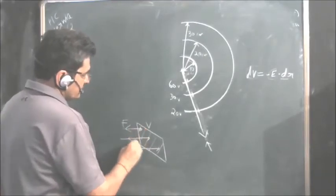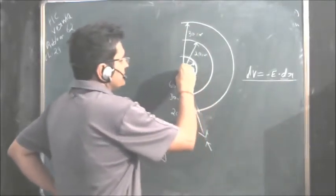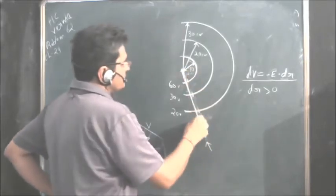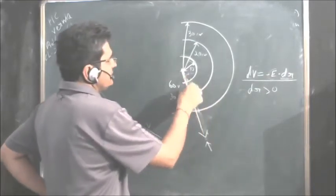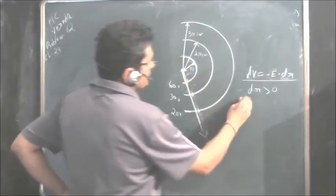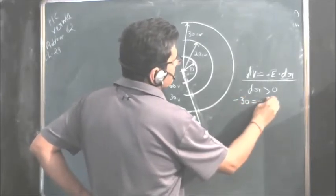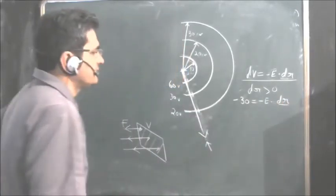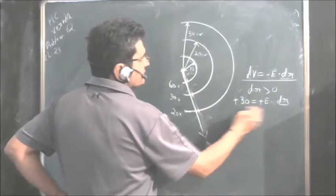Direction can be this or this, that we can find using this equation. Take direction dr as positive in this direction, positive if you move outwards. So dr is increasing, this is positive, and you see dV is decreasing here in this direction. So if you take these two, minus 30 equals minus E dot dr which is positive here. So this gets cancelled, so E is coming as positive.